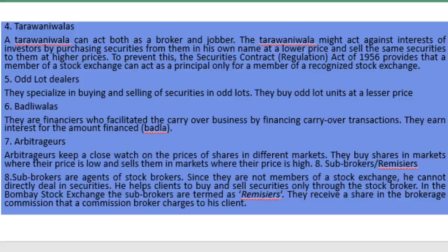The next category is known as tarawaniwallahs. They can act both as a broker and a jobber. They might act against the interest of investors by purchasing securities from them in their own name at a lower price and selling the same securities to them at a higher price. To prevent this, the Securities Contracts Regulation Act of 1956 provides that a member of a stock exchange can act as a principal only for a member of a recognized stock exchange.